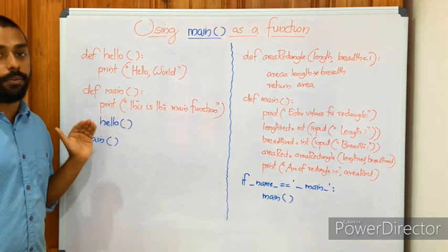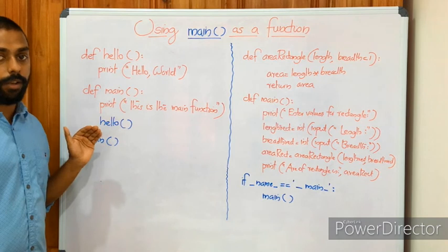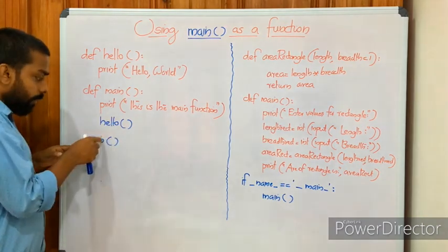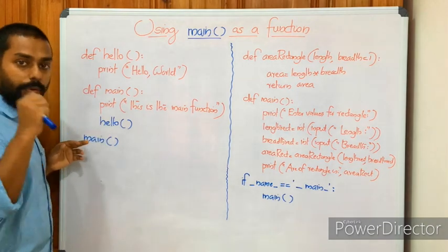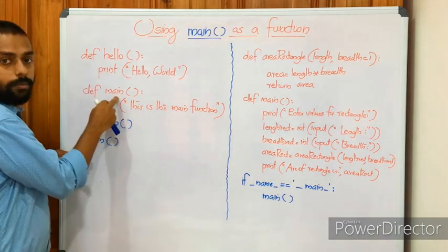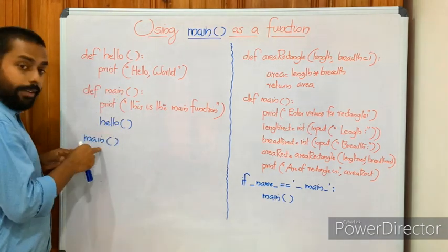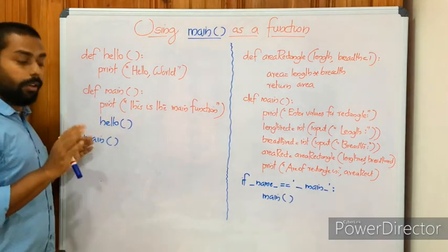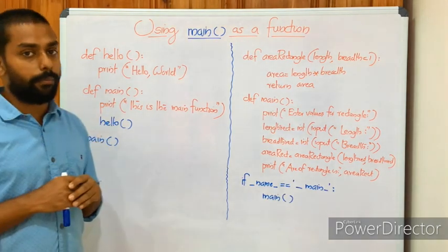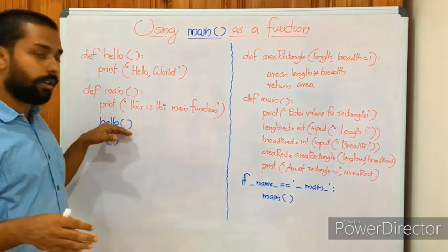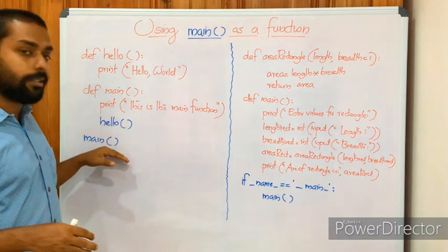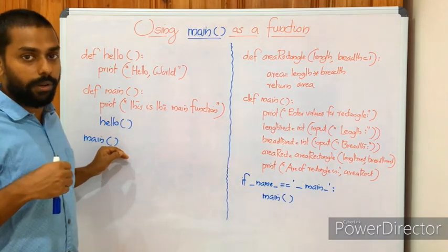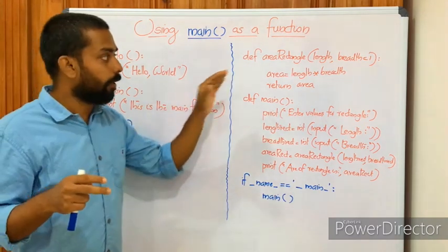This is the first method of applying the main function. It is just like calling a normal member function — the same way we call hello. Here we have two member functions: hello and main. Main can be called just like calling hello. In this first method, main is just like a normal member function. This concludes the first method of calling the main function.